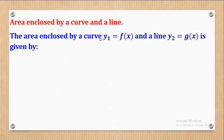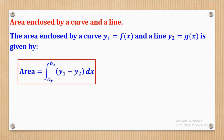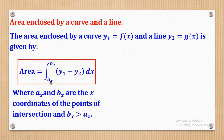The area enclosed by the curve y1 equal to f(x) and the line y2 equal to g(x) is given by: area equals the integral of y1 minus y2 with respect to x from a to b. The function of the curve minus the function of the line, where these limits are the x-values at the points of intersection.